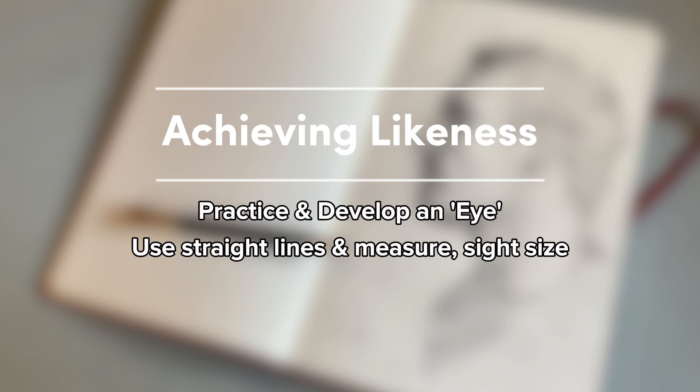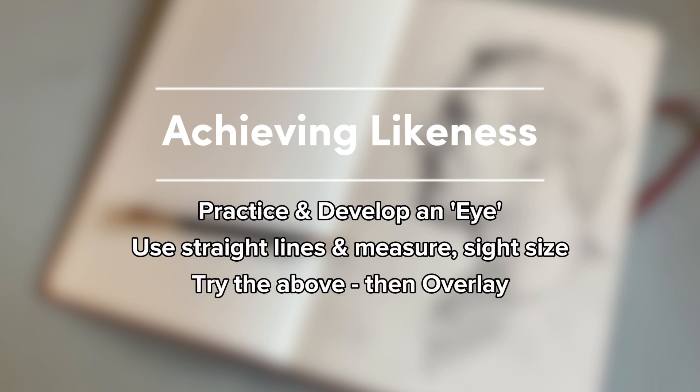One method that many artists fall back to is using a grid. My problem with grids is they become a crutch, and once we use those in our practice it doesn't really help us get better. My method is to use all of the processes above but then overlay a photo to check in on likeness — and that's like having your own art teacher on your shoulder telling you where you've got things wrong. I'll talk you through the applications I use to overlay photographs.